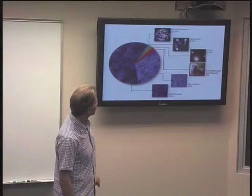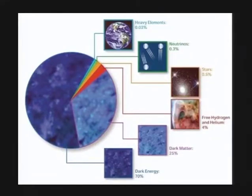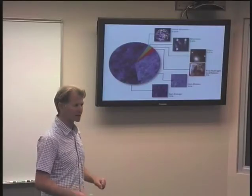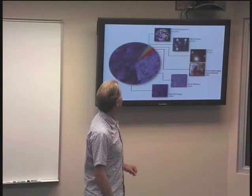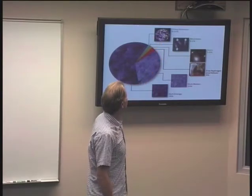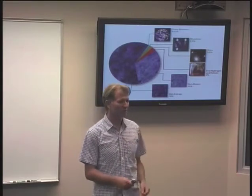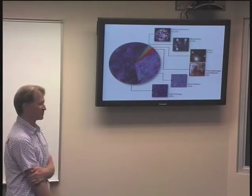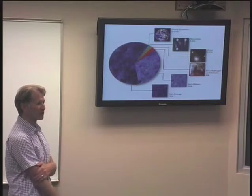The dark energy is really confusing — we don't have a good idea about what that is. Getting more into the stuff we're familiar with: hydrogen and helium make up about 4% of the material in the universe, most of it just out there in big clouds. About 0.5% of it is in stars. About 0.3% of the stuff in the universe is neutrinos — there's about a billion neutrinos going through you per second; in your lifetime, one or two will actually hit an atom in your body, but generally they go straight through. The heavy elements — anything heavier than hydrogen and helium — that's 0.03% of the stuff in the universe. What we think of as our periodic table is a tiny part of the whole story.